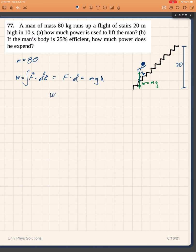And so the work done, which is also equal to energy output, would be 80 times 9.81 times the height, which is 20 meters. And putting that in the calculator, we get 15,696 joules.